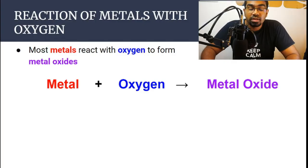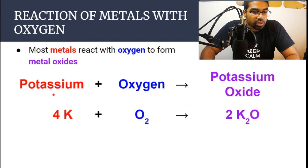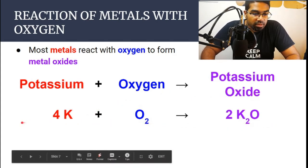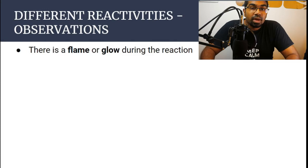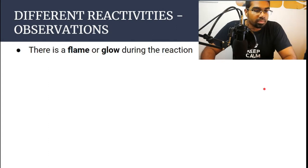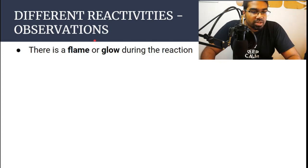Let's take a look at the reaction of metals with oxygen. Most metals react with oxygen to form metal oxides. Some are very unreactive and don't react with oxygen, but most metals do. Metal plus oxygen gives us metal oxide. For example, potassium plus oxygen gives potassium oxide. The reaction of each metal is different — the product is the same, however the way that they react is different. This is what it means by different metals having different reactivities. The rate of reaction and the vigor of the reaction is different with different metals.